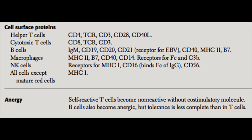B cells can express MHC class II and function as antigen-presenting cells. They also express B7 to give that co-stimulatory signal to the T helper cells.